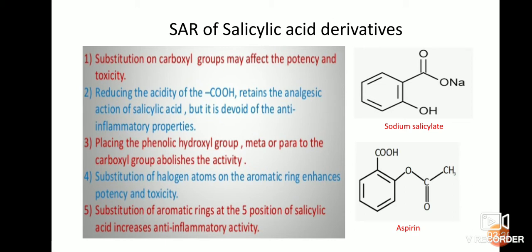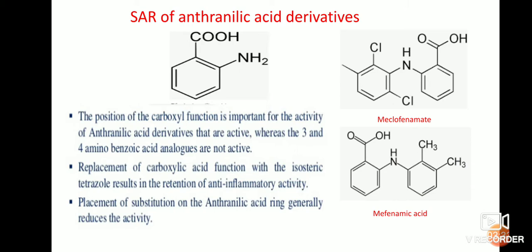Next is the structural activity relationship of anthranilic acid derivatives. I have given the anthranilic acid structure along with example drugs meclofenamate and mefenamic acid. The position of the carboxylic function is important for activity — anthranilic acid derivatives are active, whereas the third and fourth aminobenzoic acid analogs are not active.